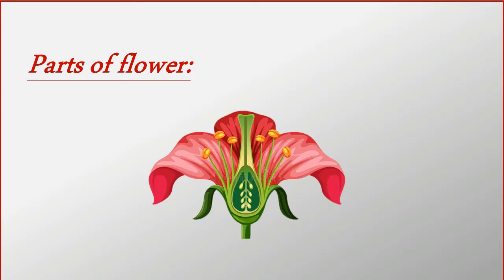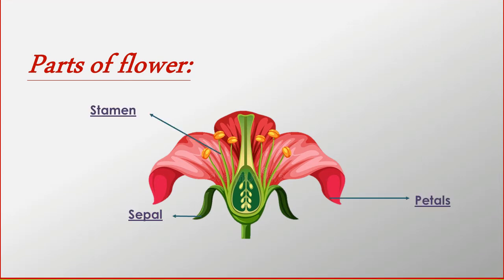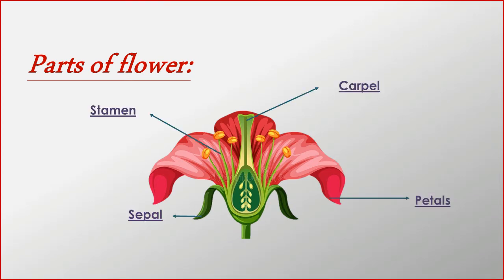A flower is the most beautiful part of the plant and it consists of four parts: sepal, petals, stamen, and carpel.